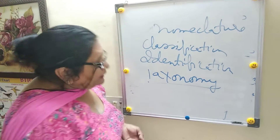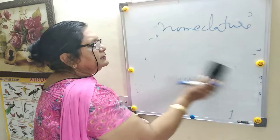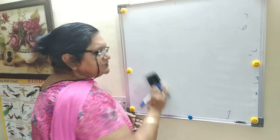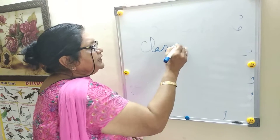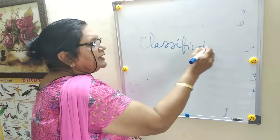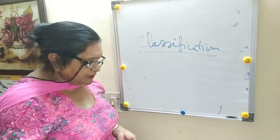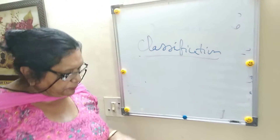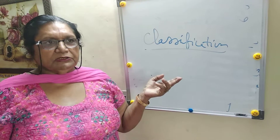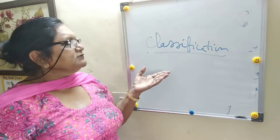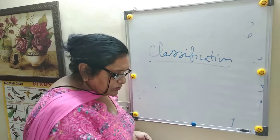Organisms have to be classified, so the next definition is classification. Classification means classifying organisms into various categories or various groups. The branch that deals with classification is called taxonomy.